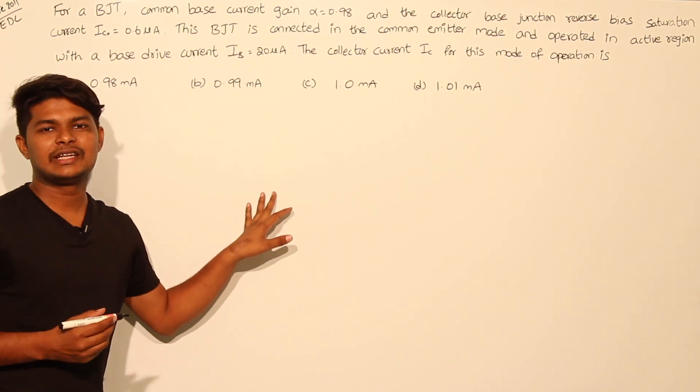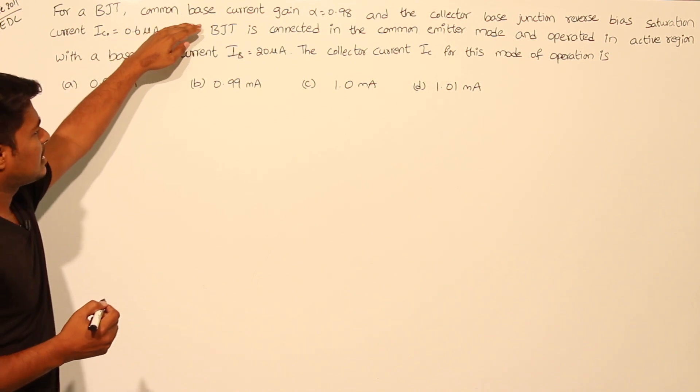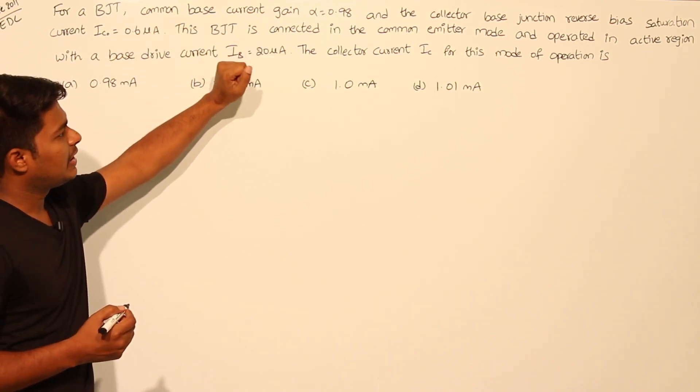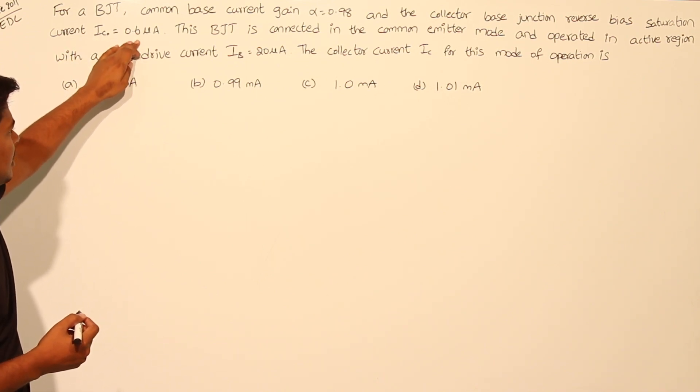Let's see this question given in GATE 2011 in the subject EDC. For a BJT common base, current gain alpha equals 0.98 and the collector base junction reverse bias saturation current IC not equals 0.6 microamps.